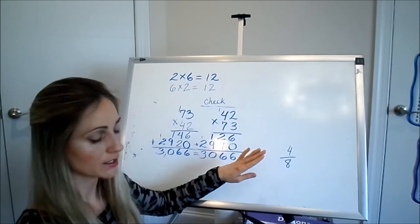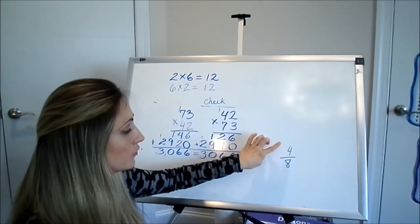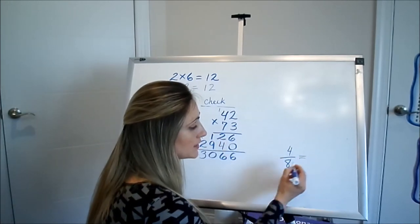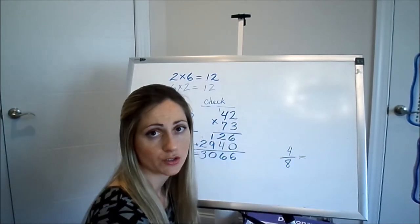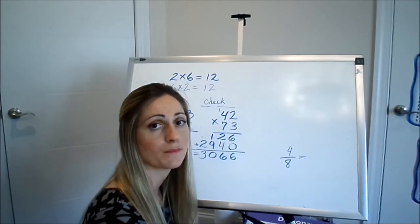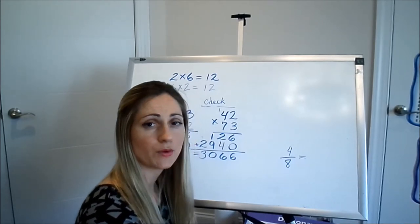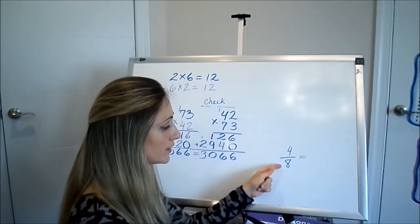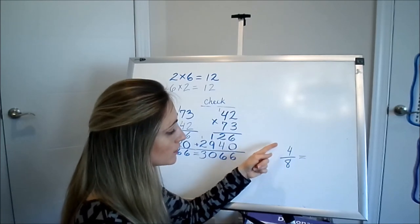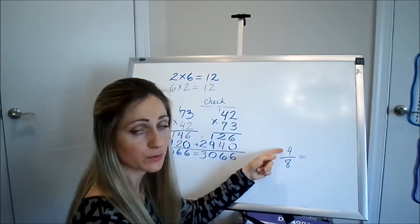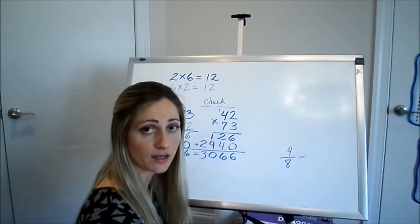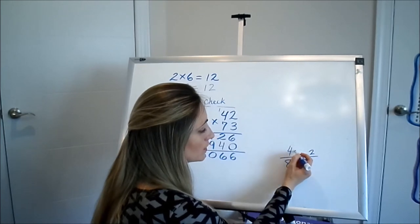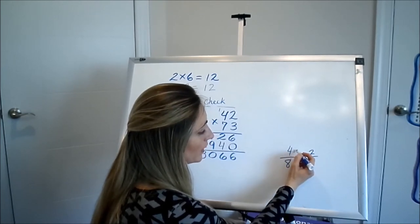All right, so for number 3, this is 3A. 4 eighths is equal to what reduced. I've seen a lot of people pick a random number but not the biggest number. You have to look for the biggest multiple that can divide both numerator and denominator. If you only divide by 2, 4 can be divided by 2 and 8 can also be divided by 2, but you're only going to get 2 fourths.